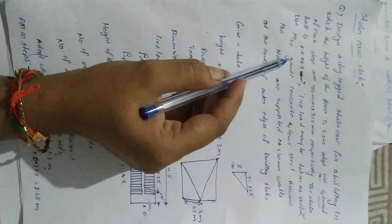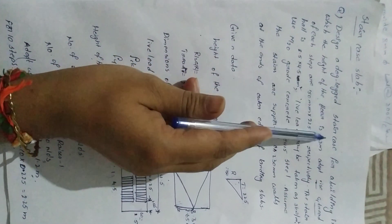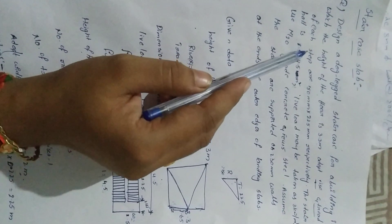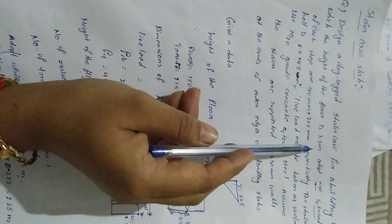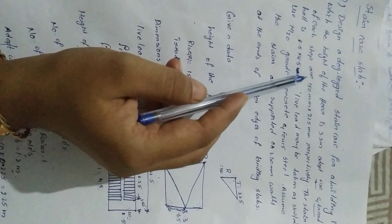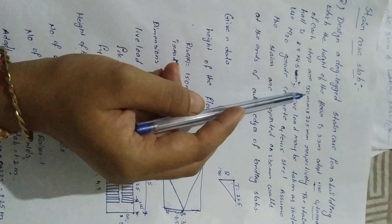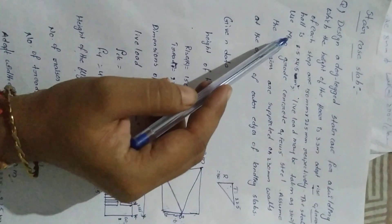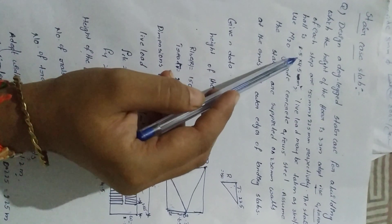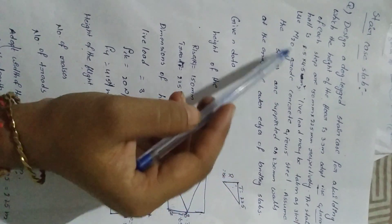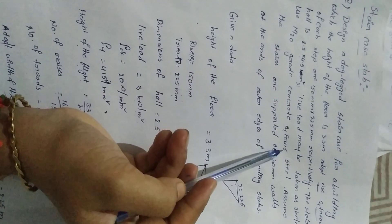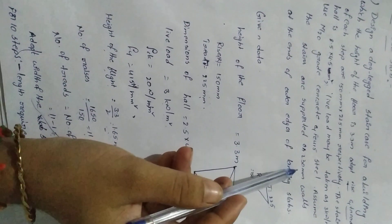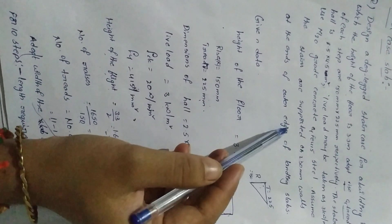Today we discuss the staircase slab. The question is: design a dog-legged staircase. The height of the floor is 3.3 meters. Rise and tread of the steps are 150 mm and 225 mm respectively. The staircase hall dimensions are 2.5 by 4.5 meters. Live load is 3 kN/m². Use M20 concrete and Fe415 steel. Wall width is 230 mm, which supports the slab of the stair.